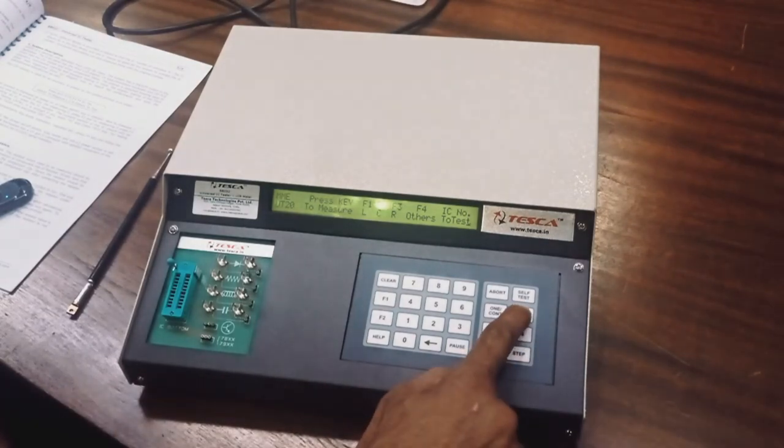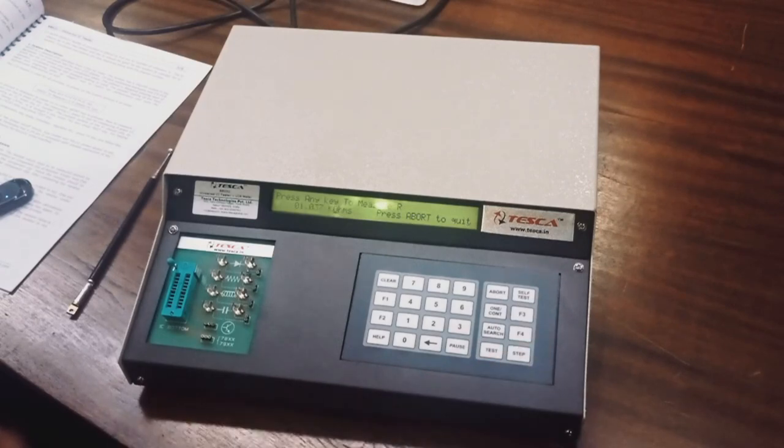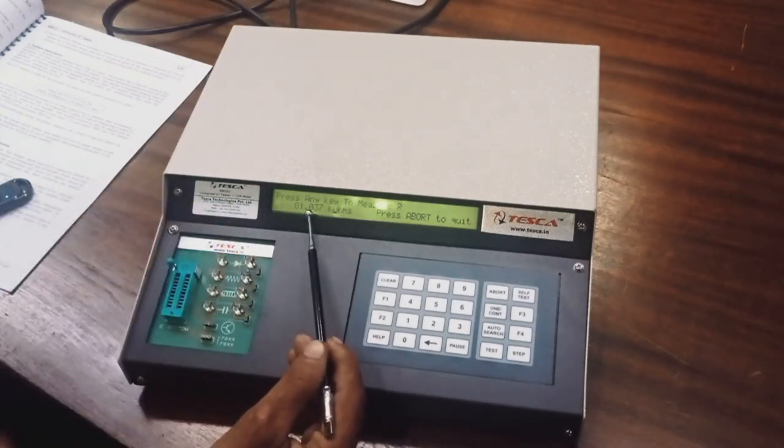Press F3. After pressing F3, it measures the resistance. It is around 1.037 kilo ohms.